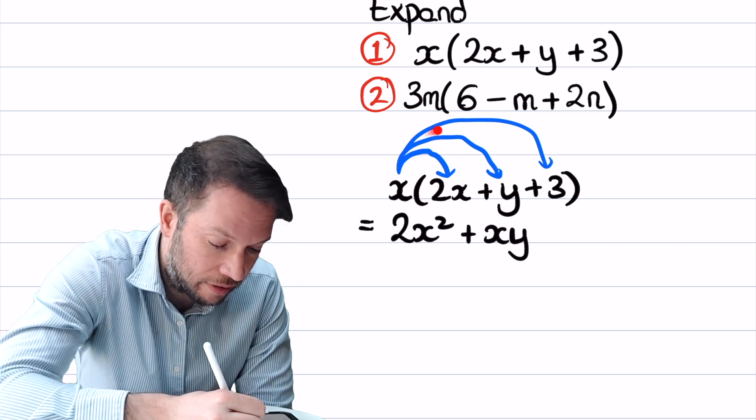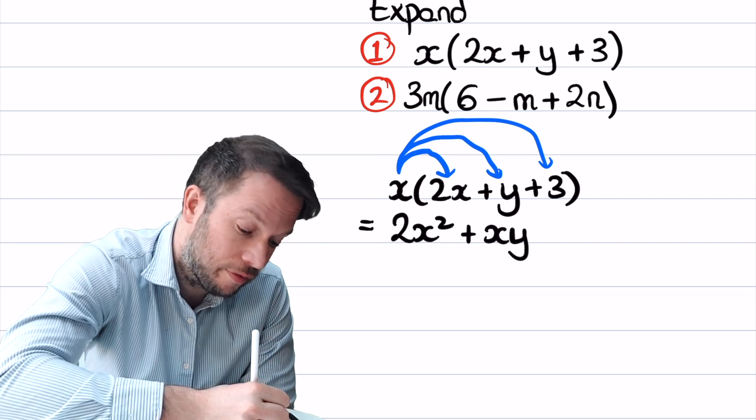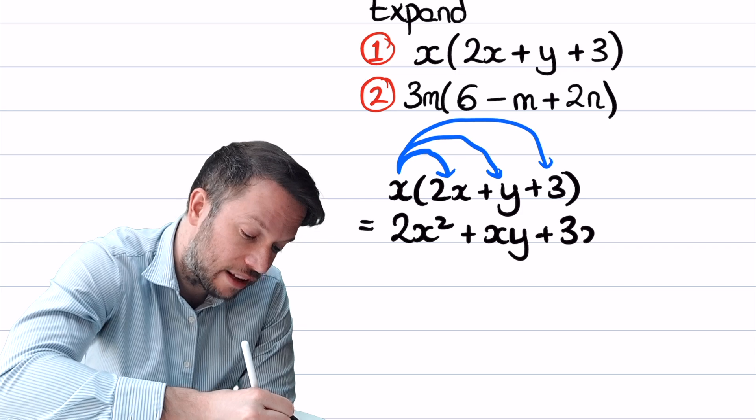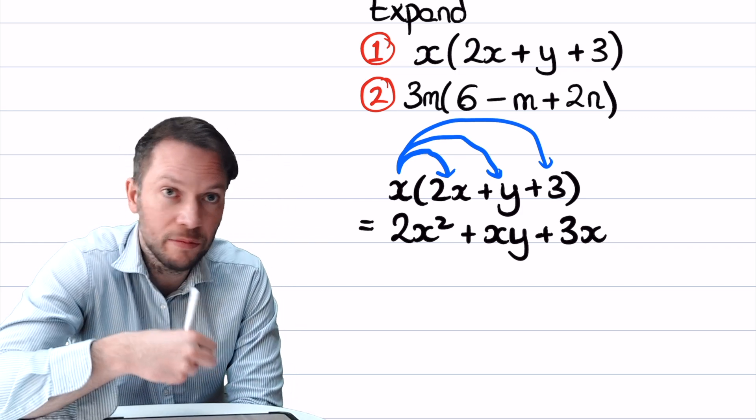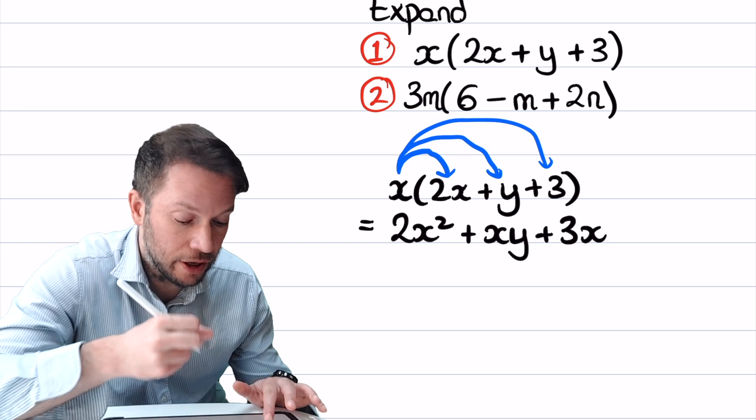Finally we've got x times by 3, which is 3x. Remember we say 3x with the number in front, not x3. We have 3 lots of x, we don't say x lots of 3. So that's the final answer.